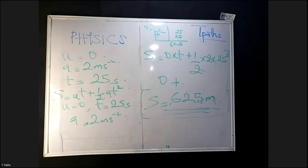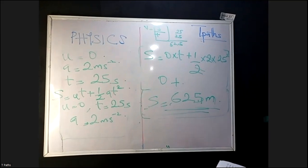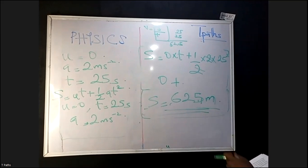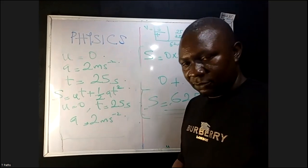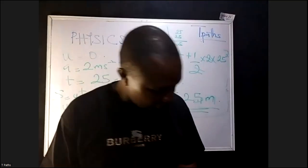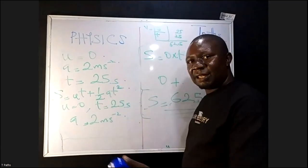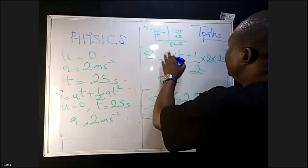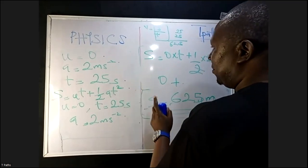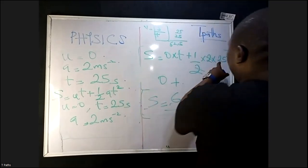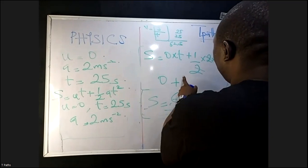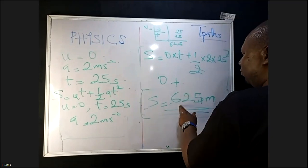That is the answer. So for that bus that starts from rest and travels at a uniform acceleration of 2 meters per second squared for 25 seconds, it travels a distance of 625 meters. Just know your equation, input the data you are given, and do your mathematical solving.